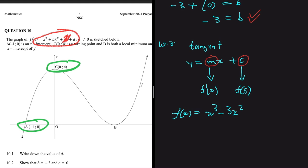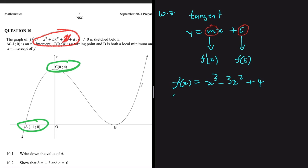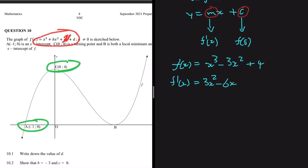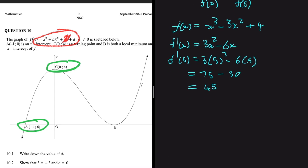Differentiating f(x) = x³ - 3x² + 4, we get f'(x) = 3x² - 6x. The constant 4 drops away. Substituting x = 5: f'(5) = 3(25) - 6(5) = 75 - 30 = 45. So the gradient m = 45.